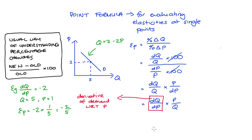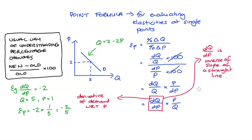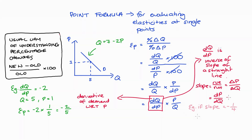One last common thing you might be tested on is finding dQ/dP by thinking about the inverse of the slope. The slope is rise over run, which in the context of a demand curve is the change in price divided by the change in quantity — interpreted as infinitesimally small, that's dP/dQ. So the slope equals dP/dQ, which is the inverse of dQ/dP. If the slope of the demand curve is negative one-quarter, then dQ/dP is the inverse: negative 4.